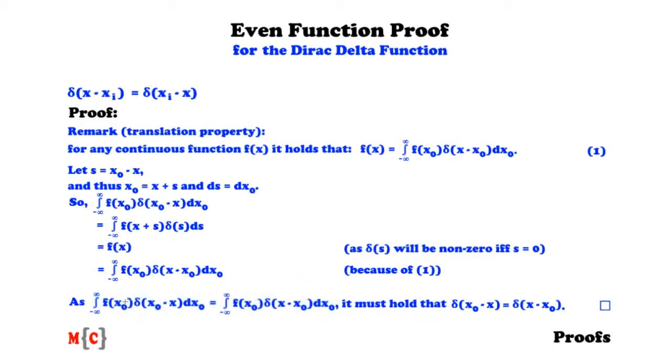So from this equality we know that there's only one difference, namely that the variables x_0 and x are interchanged. Therefore it must hold that δ(x_0 - x) and δ(x - x_0) are equal, and that's what we had to prove. Q.E.D.